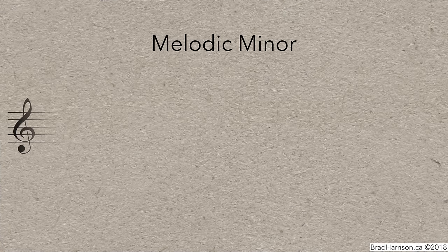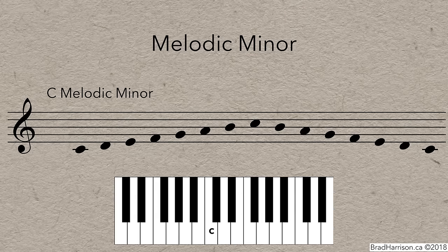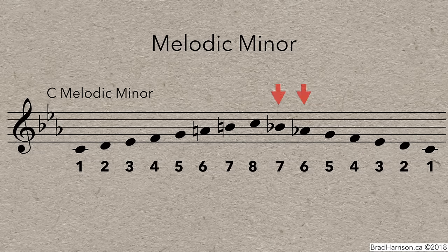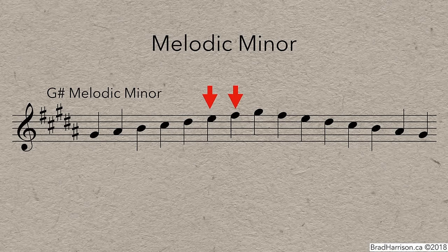The third type is the melodic minor scale — a special case because it's different on the way up and down. Write the notes ascending and descending, then add the key signature from the relative major. To make it melodic minor, raise the sixth and seventh notes by a semitone on the way up — A flat and B flat become A natural and B natural — then lower them back down a semitone on the way down. For F sharp melodic minor, the sixth and seventh are natural, so they get raised to sharp ascending, then lowered back to naturals descending. For G sharp melodic minor, the sixth E natural gets raised to E sharp, and the seventh F sharp gets raised to F double sharp ascending; on the way down, they return to F sharp and E natural.